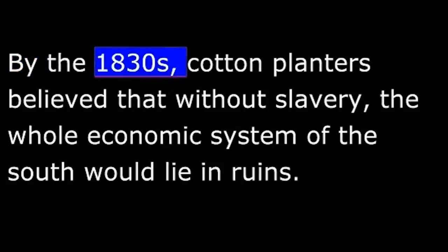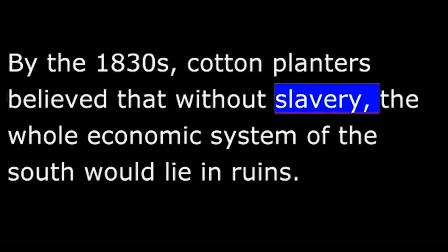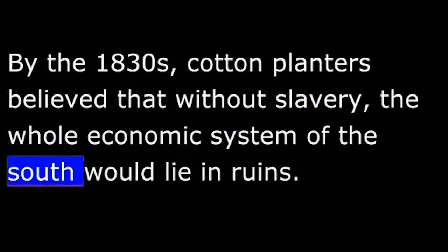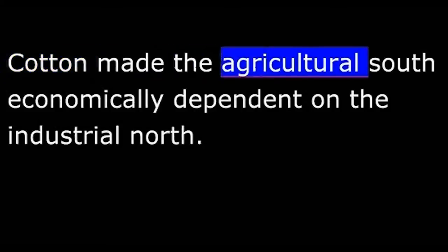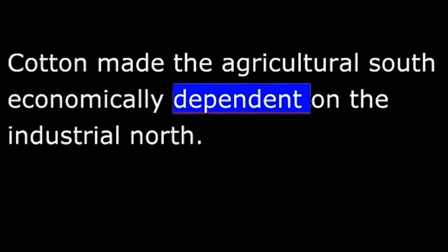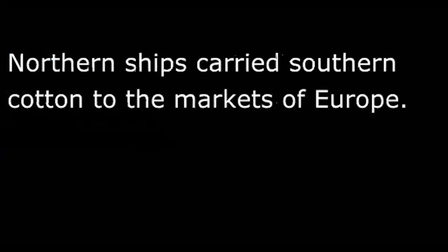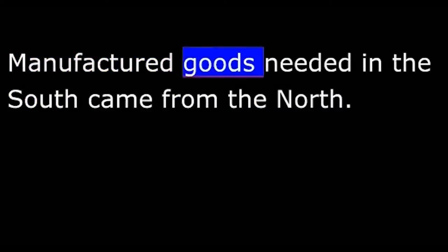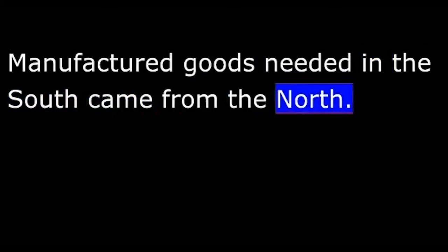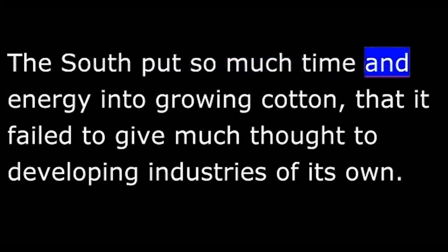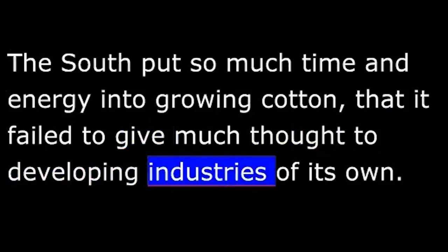By the 1830s, cotton planters believed that without slavery, the whole economic system of the South would lie in ruins. To them, slavery was no longer just a question of right or wrong. It was a necessity for survival. Cotton made the agricultural South economically dependent on the industrial North. Northern ships carried Southern cotton to the markets of Europe. Manufactured goods needed in the South came from the North. The South put so much time and energy into growing cotton that it failed to give much thought to developing industries of its own.